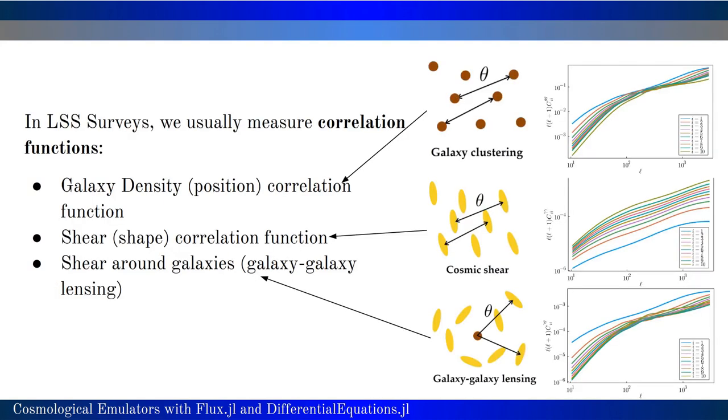In large scale structure surveys, we usually deal with correlation functions, either correlating the position or the shape of galaxies. This is shown in those cartoons, and on the right plots you can see those correlation functions, usually known as CLs.